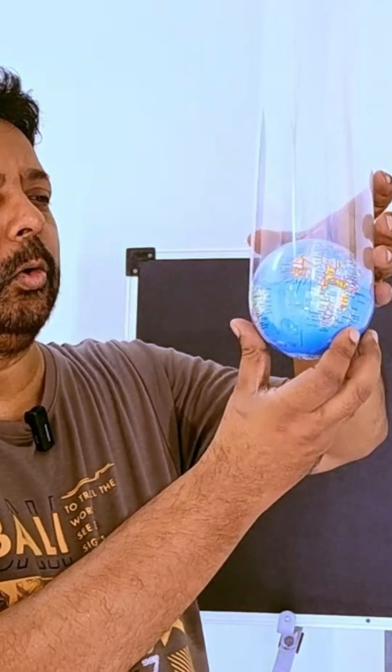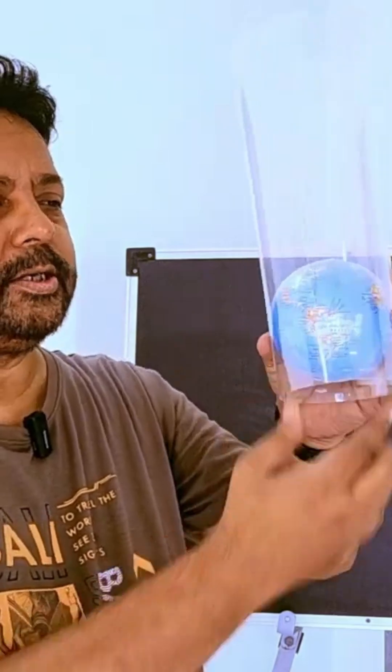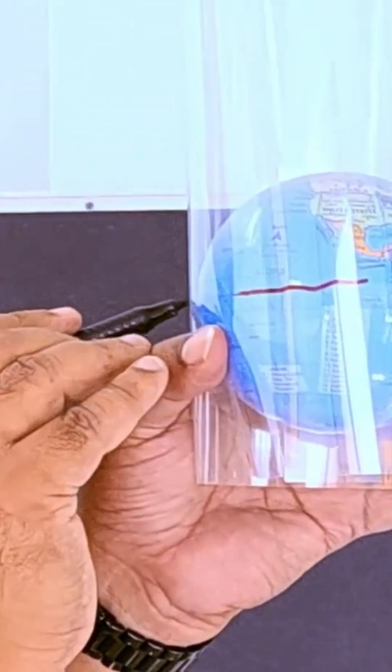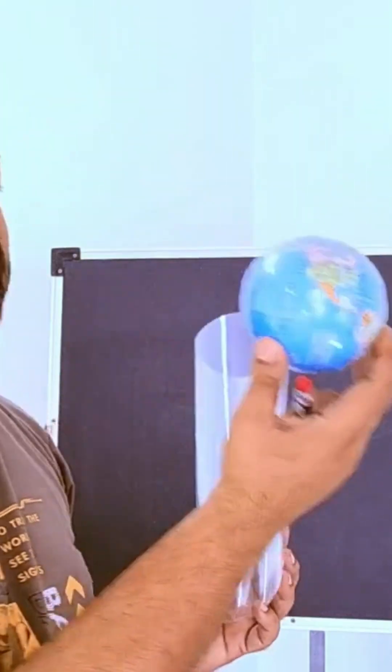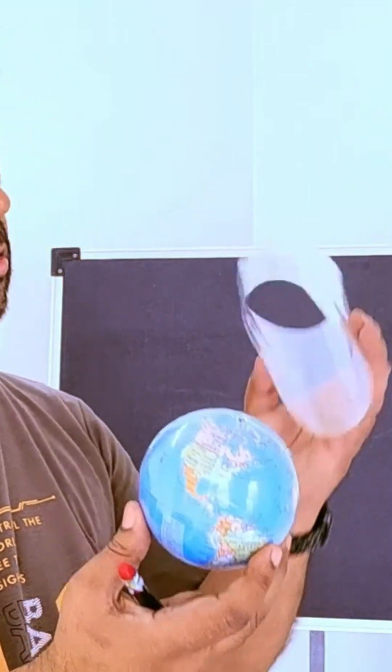In a Mercator projection, you put a cylindrical paper on top of a globe. The globe sits straight so only the equatorial parts are touching the globe. Now in Universal Transverse Mercator, we do the same thing but a little differently.